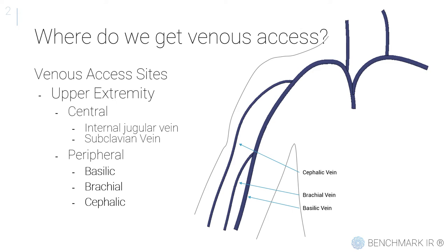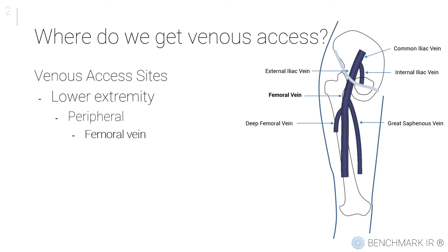Again, in the upper extremity, PICs are catheters that are inserted into one of these peripheral veins and whose tip terminates in the superior vena cava. And in the lower extremity, venous access is most commonly obtained in the femoral vein.